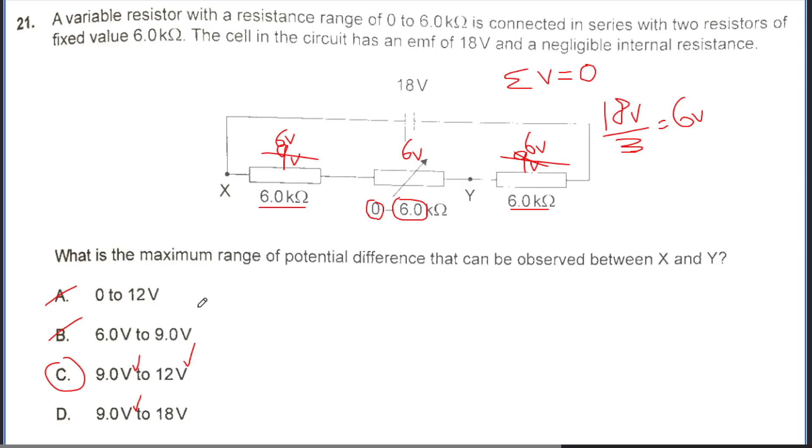One other way to solve this is to use V equals IR. Consider the first case where the resistance is 0. I equals V over R. V is equal to 18 volts, and R is our total. So we have 6 kiloohms plus 6 kiloohms, so a total of 12 kiloohms when the resistance in the variable resistor is 0. So 18 over 12, that is going to give us 1.5 milliamps.